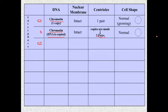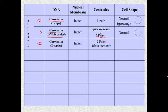At the end of the S part of interphase, the cell enters the G2 phase, and during the G2 phase, we now have two copies of our chromatin. That's because it was previously copied during the S phase. Our nuclear membrane is still intact. And now, of course, because our centrioles were copied, we now have two pairs of centrioles during the G2 phase. And our cell shape is normal.